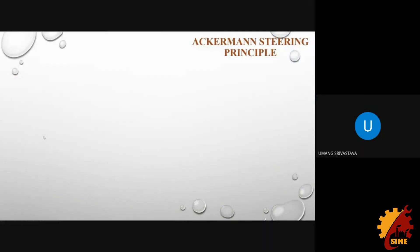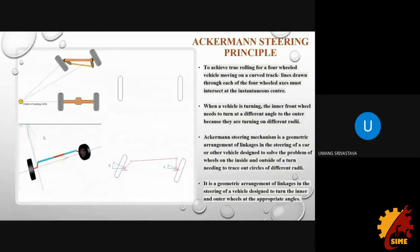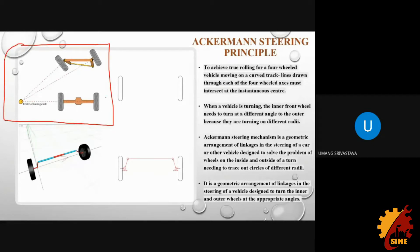Now we come to the Ackerman principle — the most important principle of steering. According to the Ackerman principle, to achieve true rolling of a four-wheeled vehicle moving on a curved track, lines drawn through each of the four wheel axes must intersect at an instantaneous center. That is, while turning, all the angles made by the front wheels and rear axle should meet at a single point, allowing the car to maneuver through a turn without scrubbing any wheel.